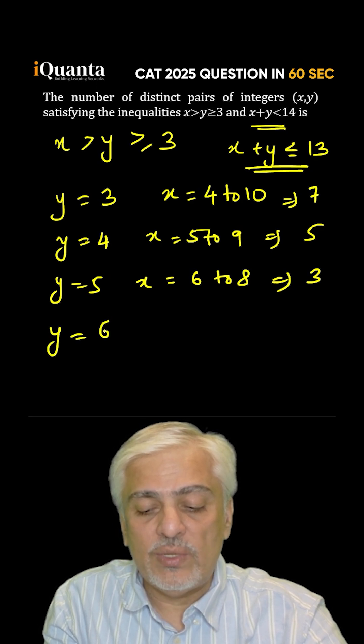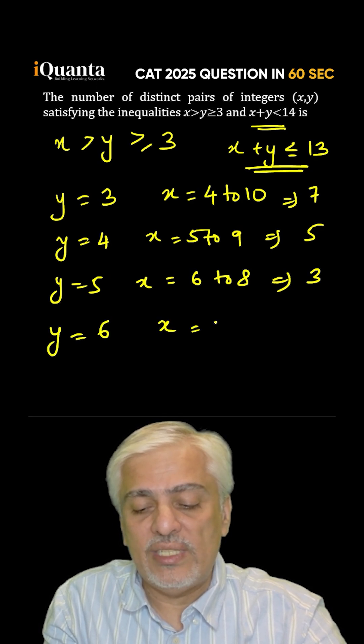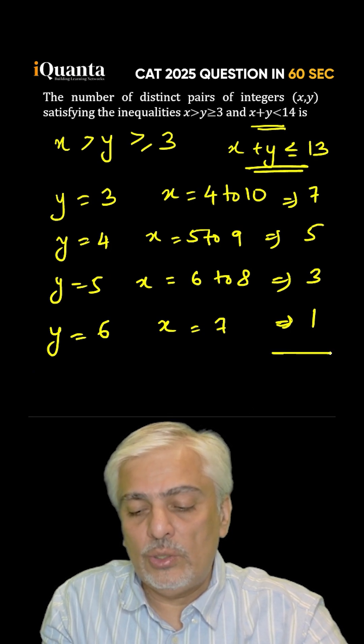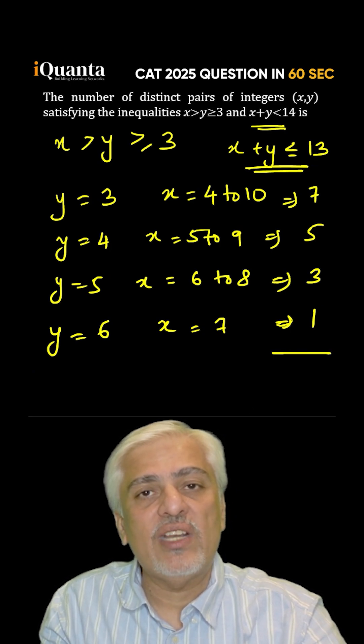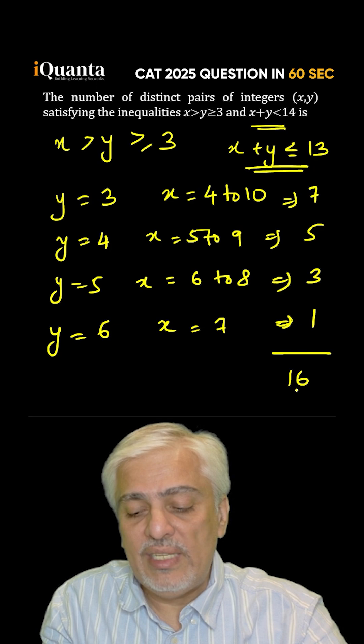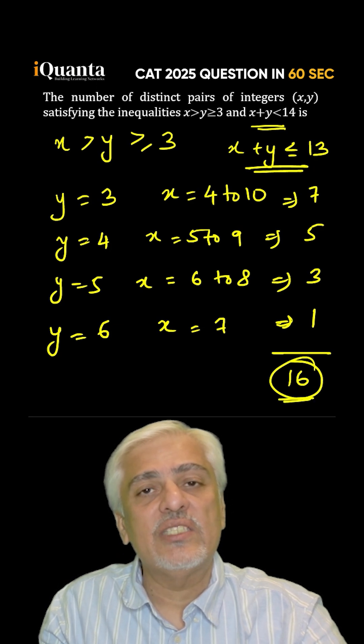And last when y is 6, x can be only 7 having only 1 value. Total of all the values 7 plus 5 plus 3 plus 1 will be 16 values which will be the answer for this question.